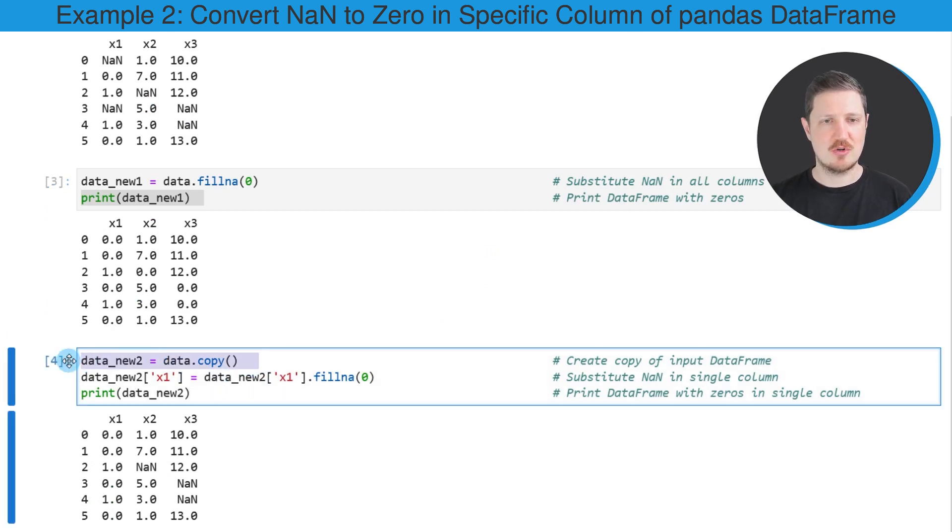In the first line of code, I'm creating a copy of our data frame, because I also want to keep an original version of our input data frame. Then in the next line of code, I'm subsetting our data frame, and I'm extracting only the values of the column x1. Then I'm applying the fillNA function to this column.